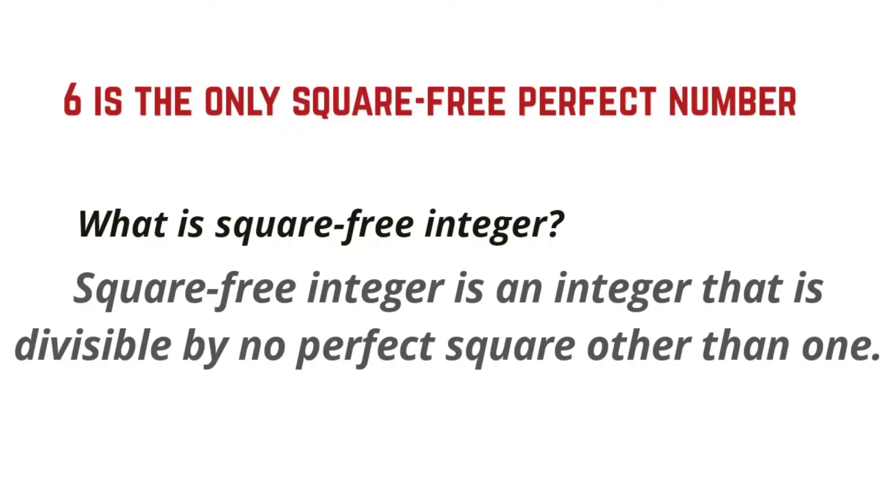6 is the only square-free perfect number. What is a square-free integer? A square-free integer is an integer that is divisible by no perfect square other than 1.